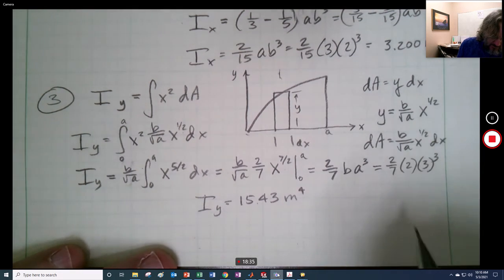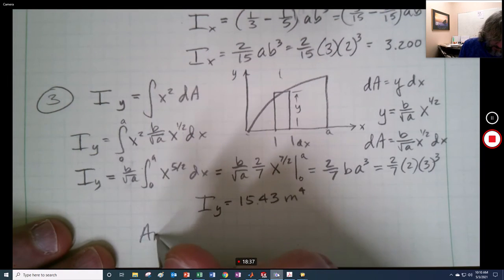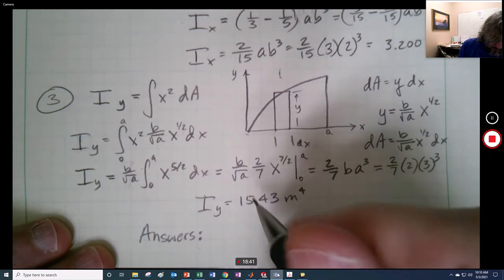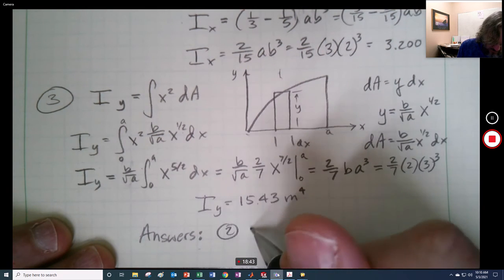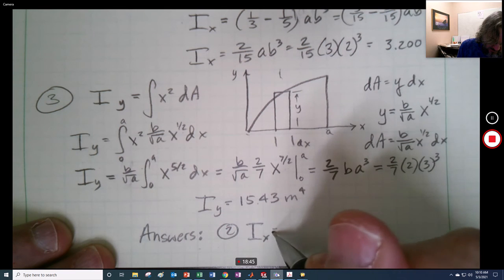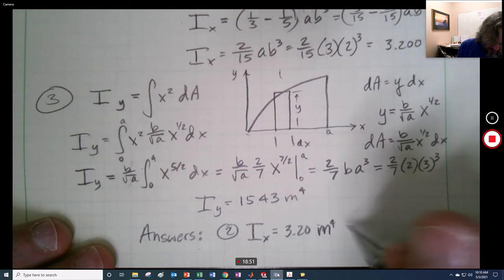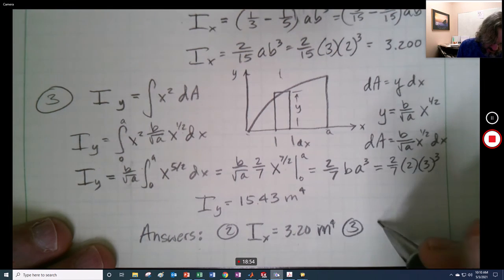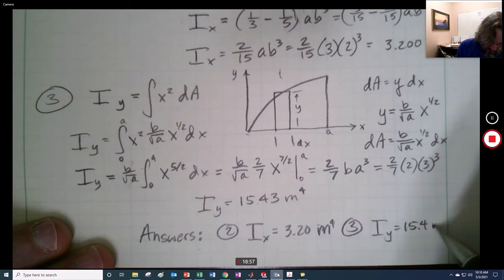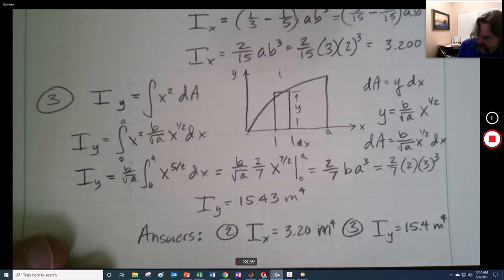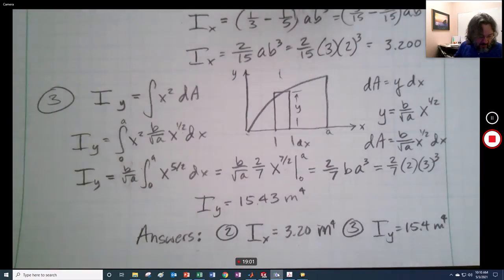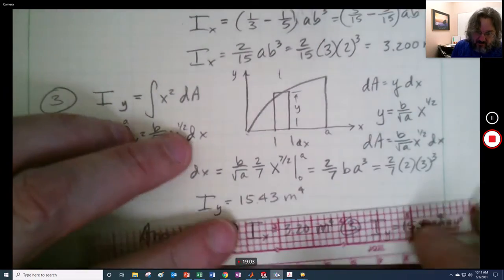So the answers: problem 2, Ix equals 3.20 meters to the fourth, and problem 3, Iy is 15.4 meters to the fourth. Right there. Let me box these in.